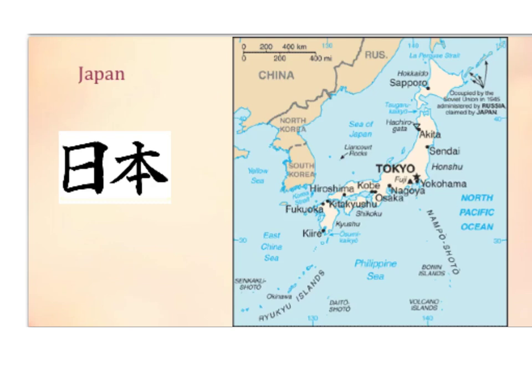Let's take a look at Japan's geography. Japan is broken into islands — four main islands and hundreds of small islands. The first big island is Hokkaido, the second and largest main island is Honshu, and towards the bottom you have Shikoku and Kyushu. If you look to the left, this is Japanese writing, called kanji. This is Japanese writing for the word Japan: Nihon.